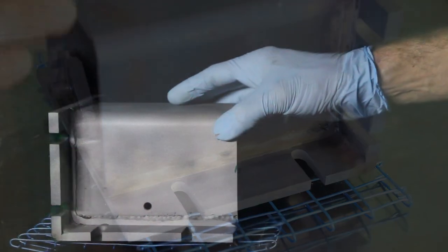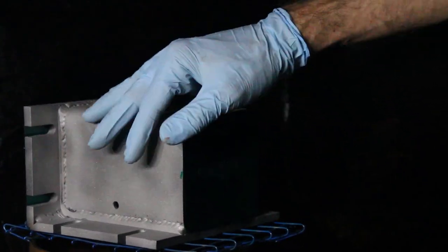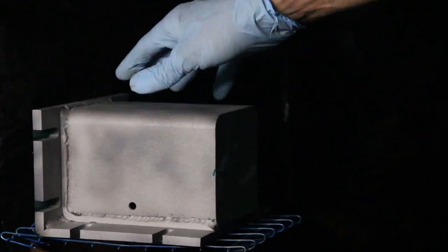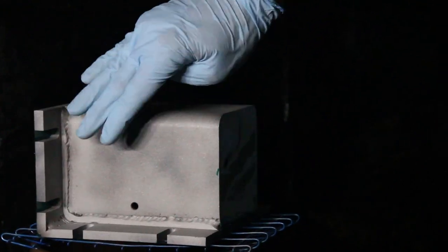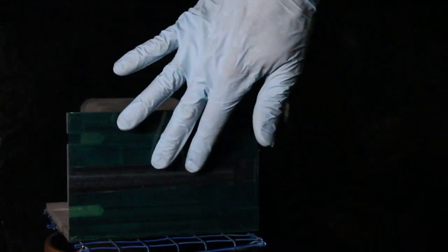Off camera I took the part back to the sandblaster and cleaned off all the oxidation from the baking, and I think it came out looking pretty good. I repeated my treatment of wiping it all down with acetone, so I have a nice clean surface.